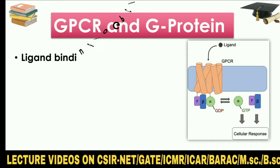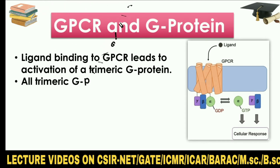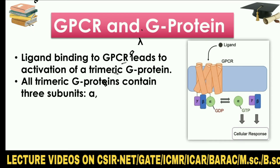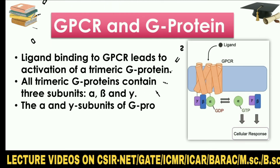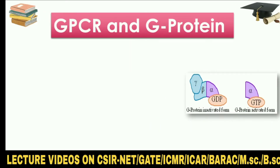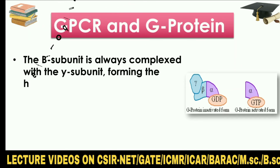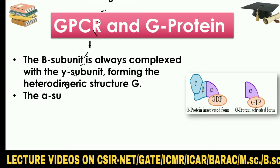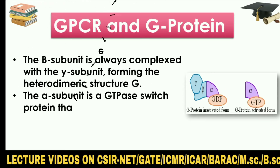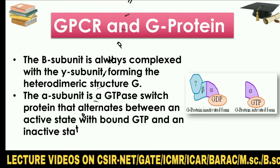Ligand binding to a GPCR leads to activation of a trimeric G-protein. All trimeric G-proteins contain three subunits: alpha, beta, and gamma. The alpha and gamma subunits of G-proteins are anchored to the membrane lipids covalently. The beta subunit is always complexed with the gamma subunit, forming the heterodimeric structure G-beta-gamma. The alpha subunit is a GTPase switch protein that alternates between an active state with bound GTP and an inactive state with bound GDP.